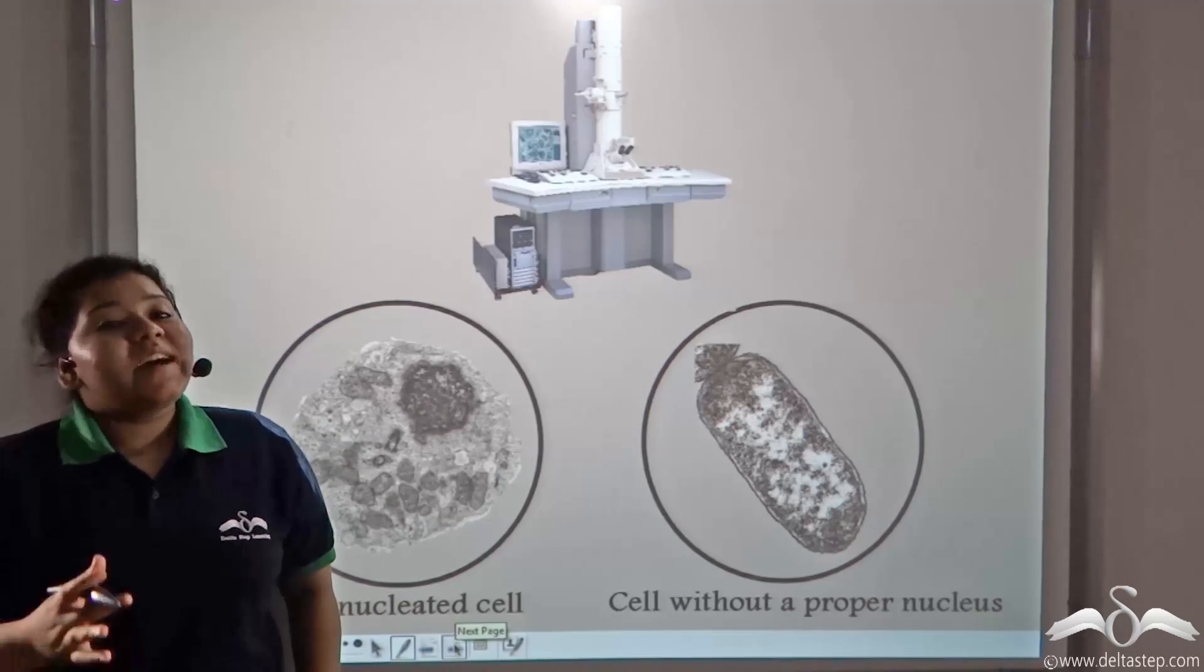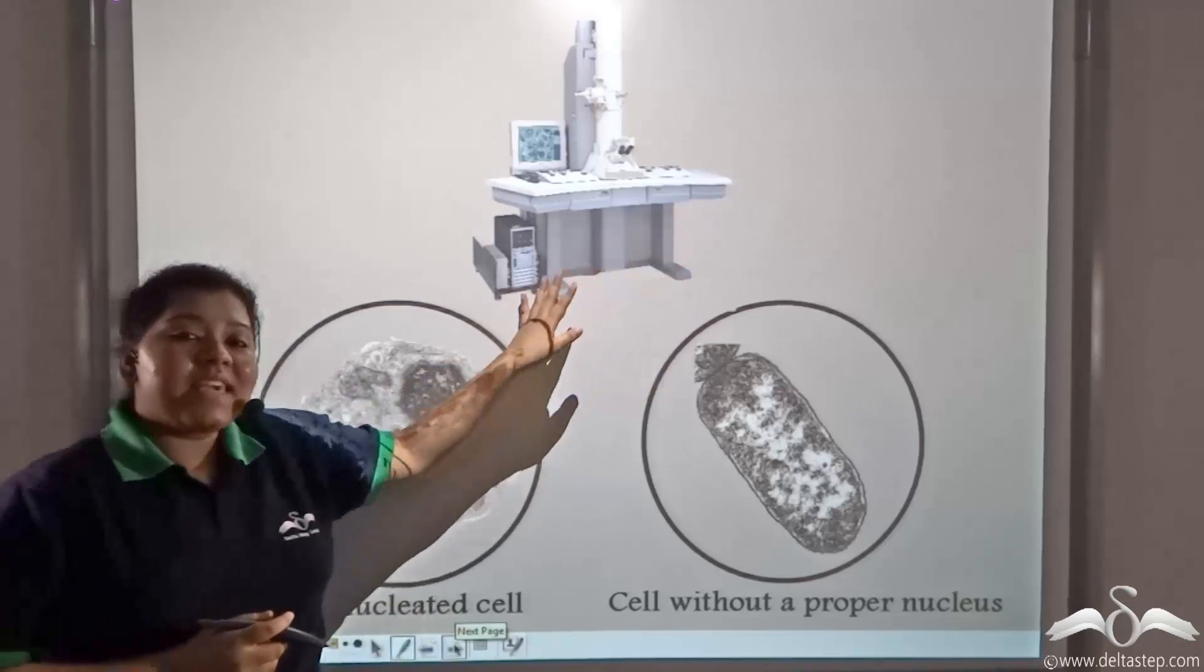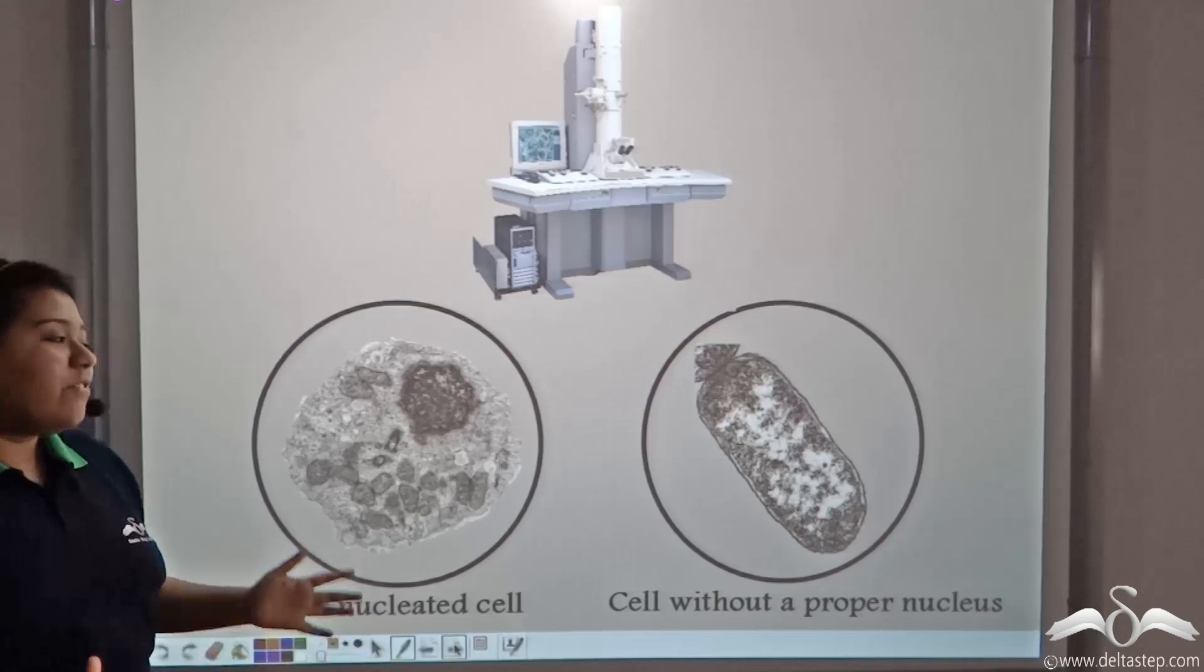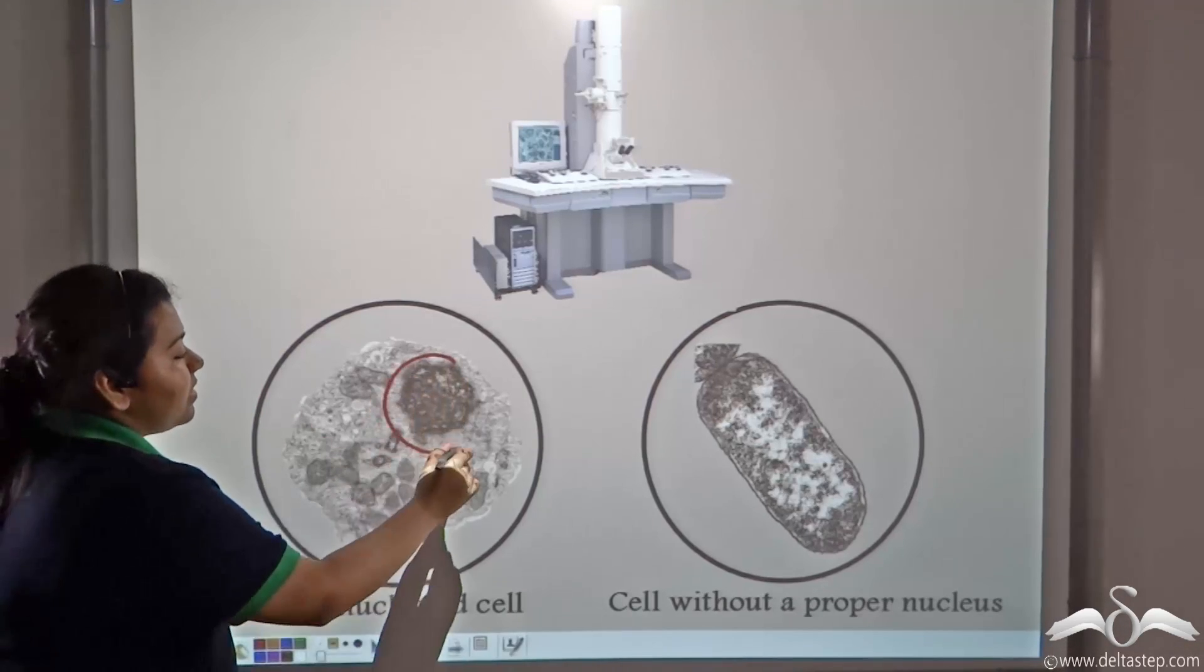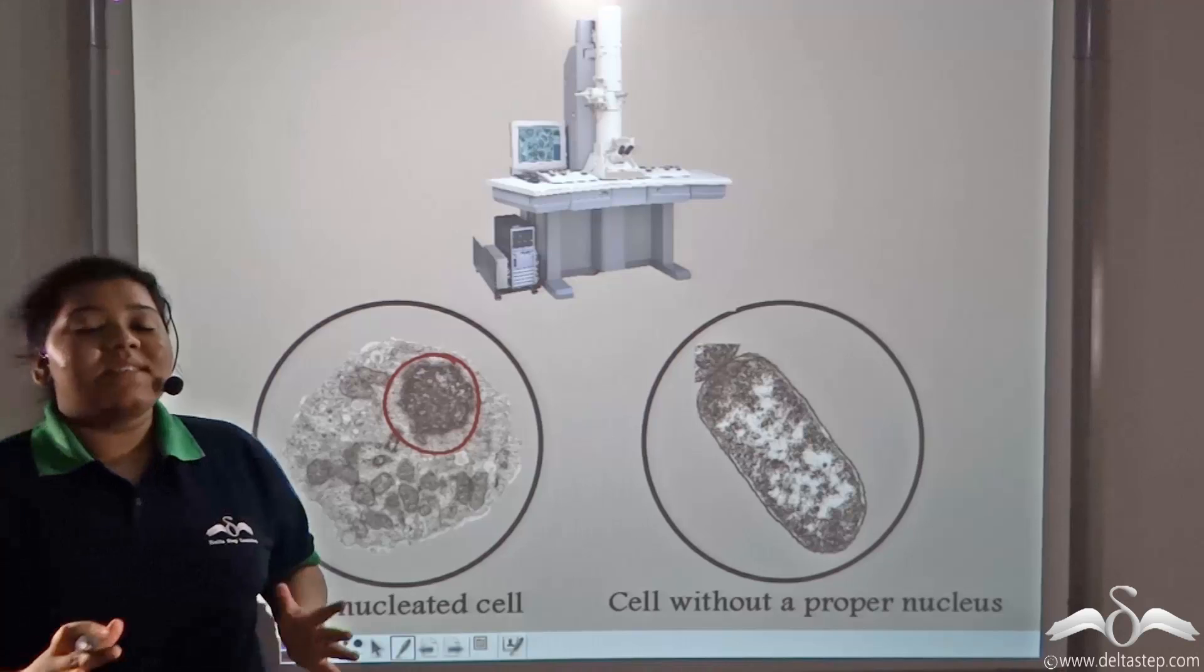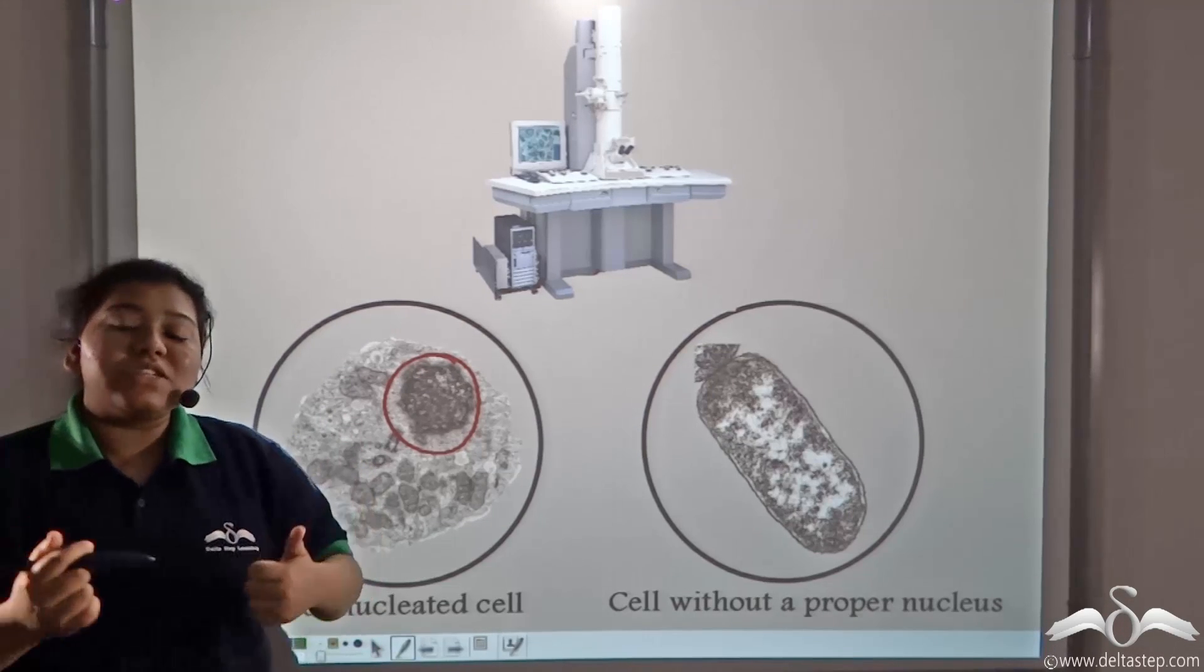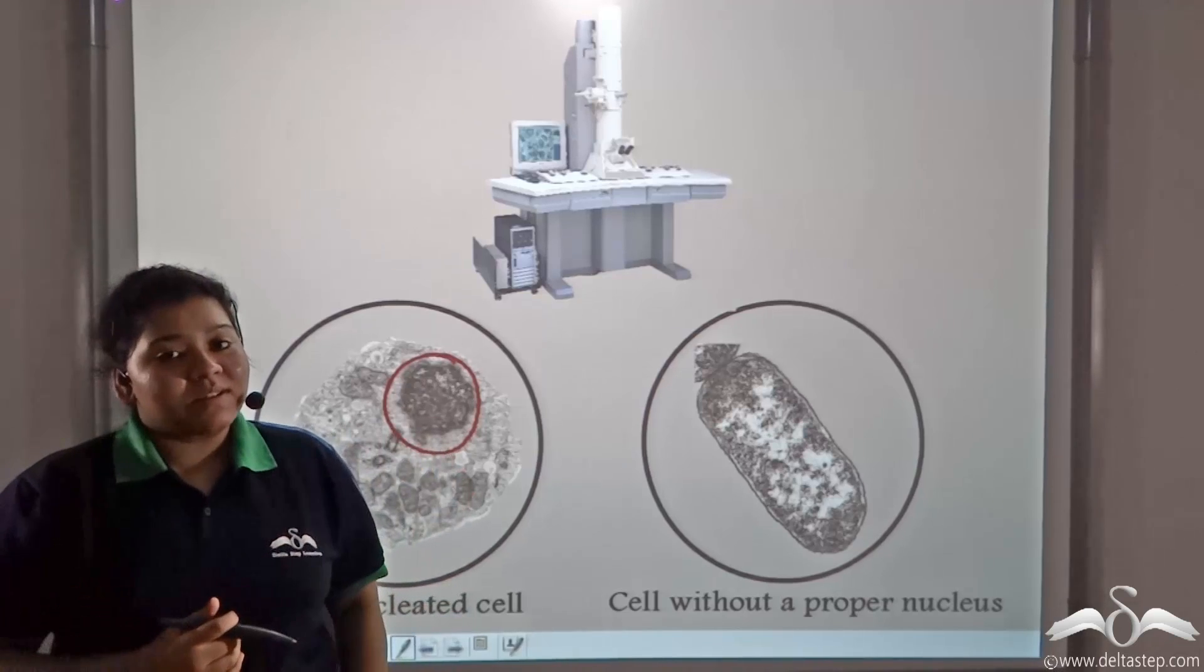Now, with the advent of the electron microscope, it was seen that all these microorganisms that we discussed about have a compact nucleated cell. That is, their nucleus has a proper nuclear membrane and all the nuclear materials are enclosed within the nucleus.